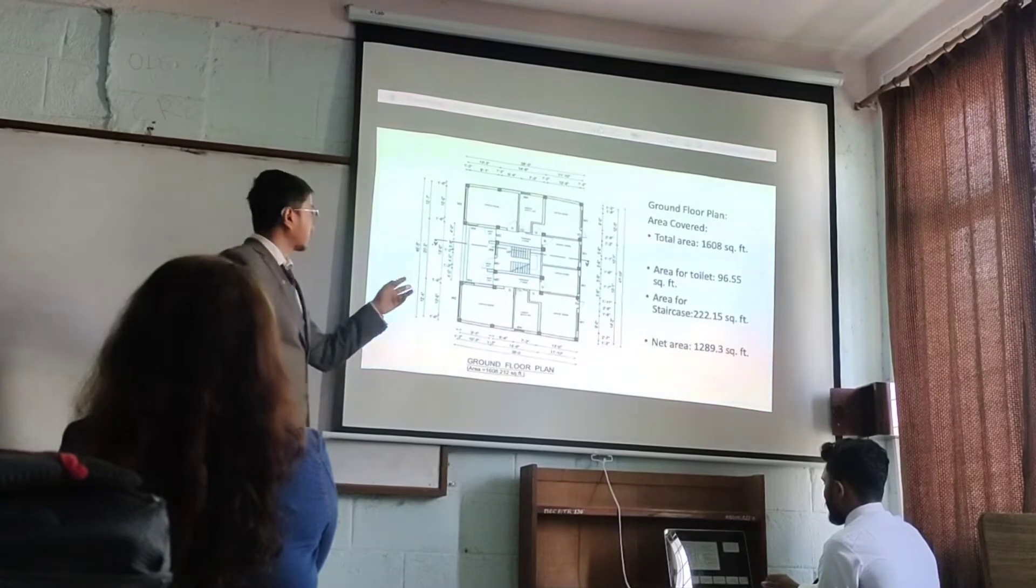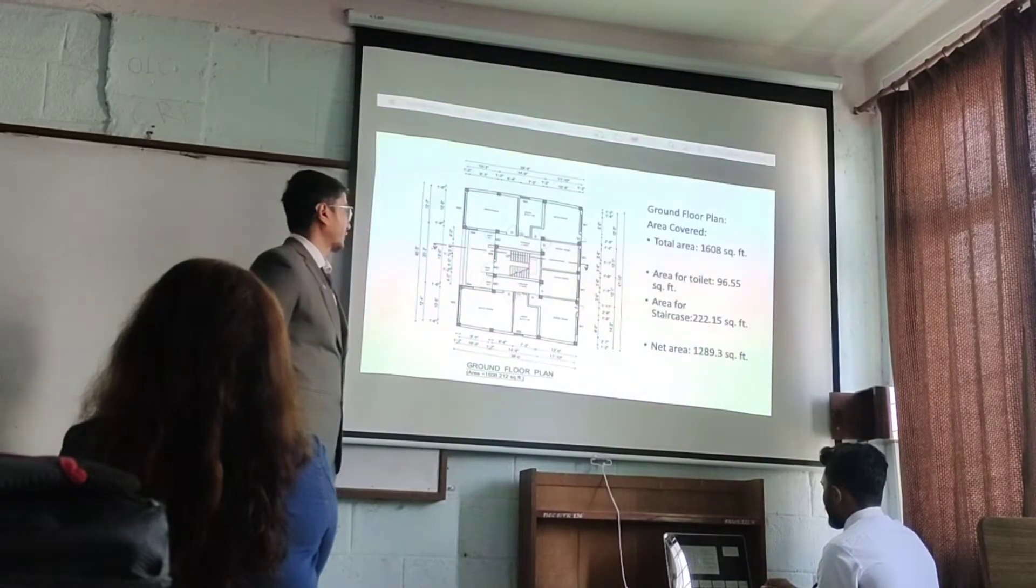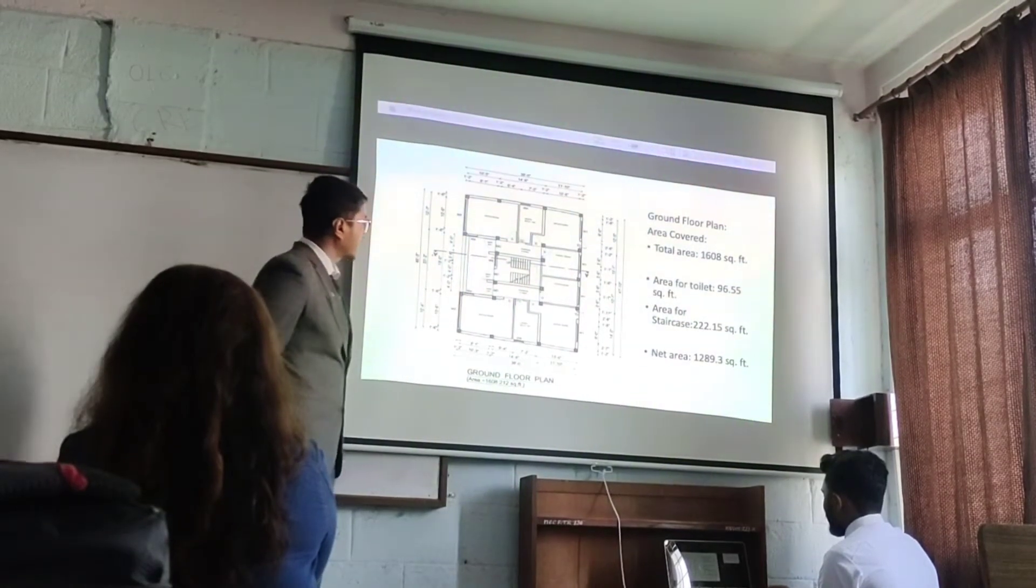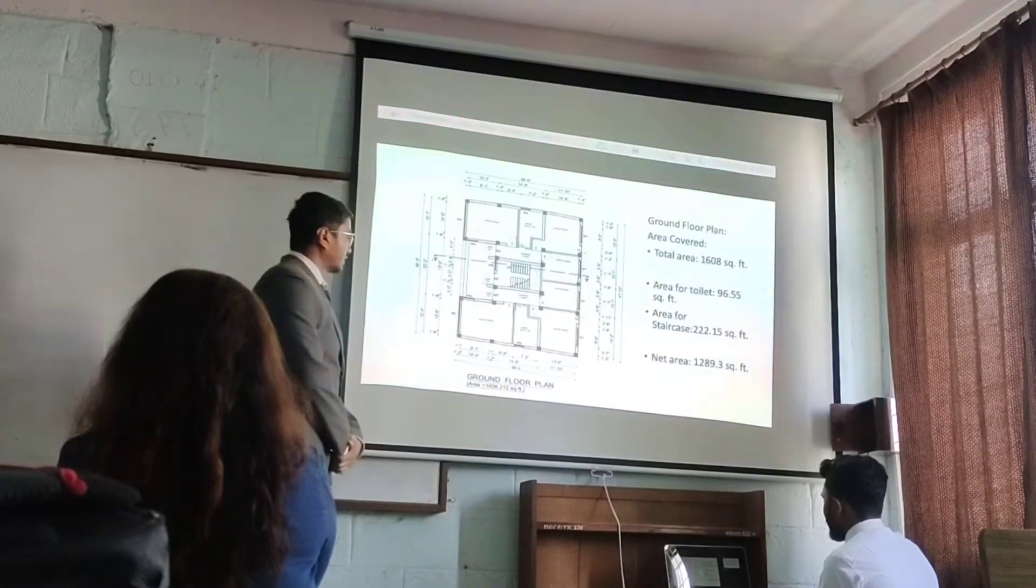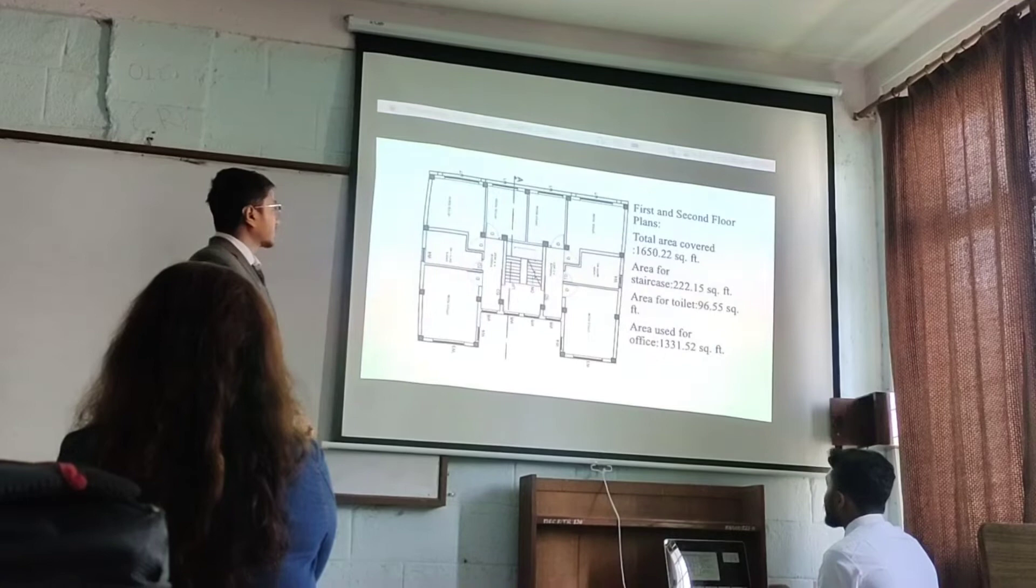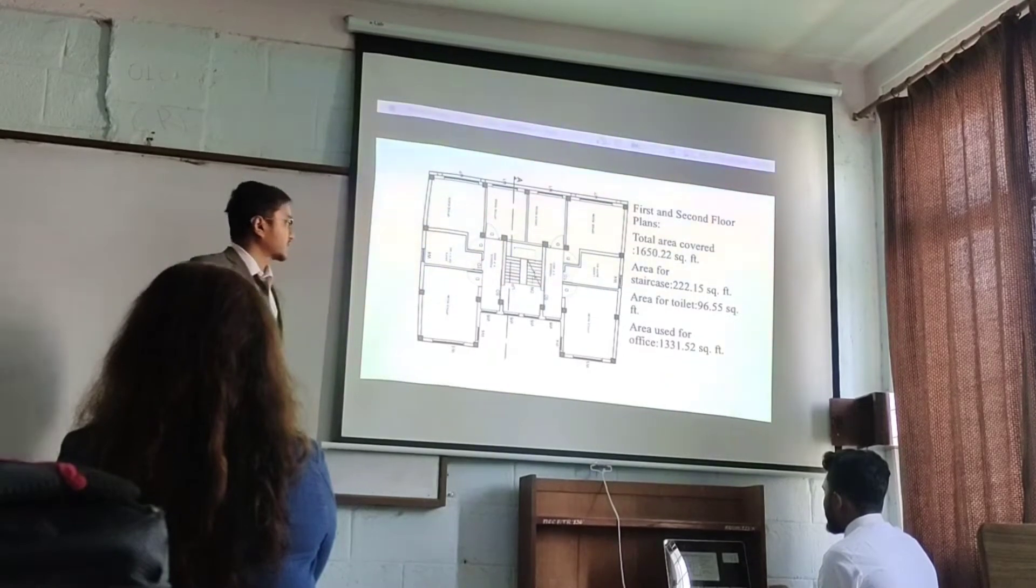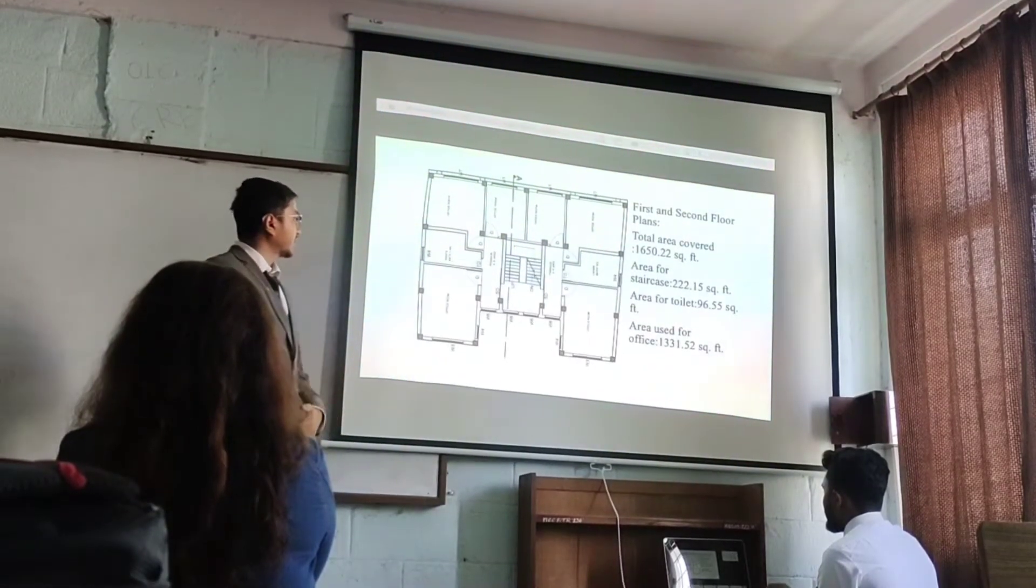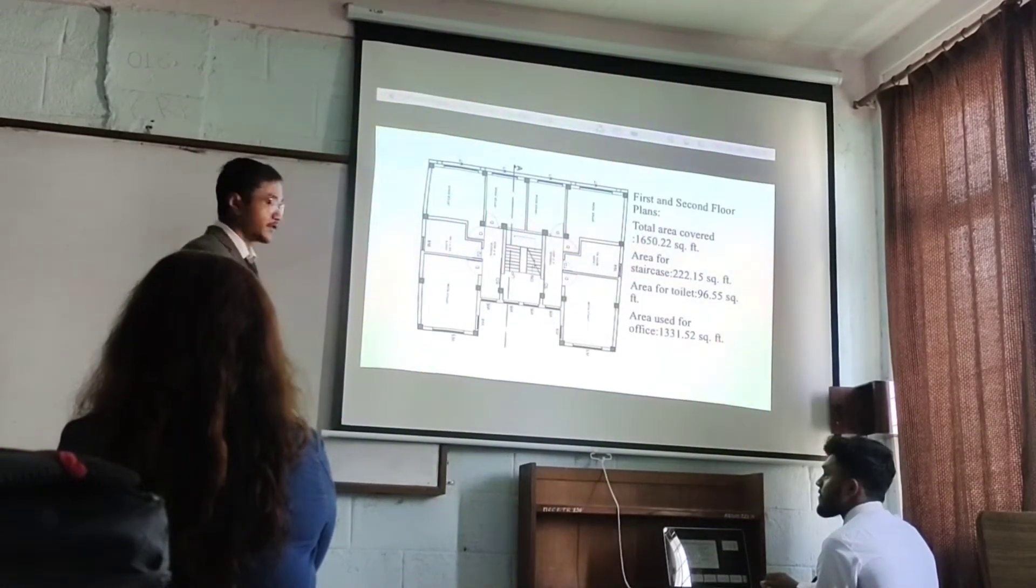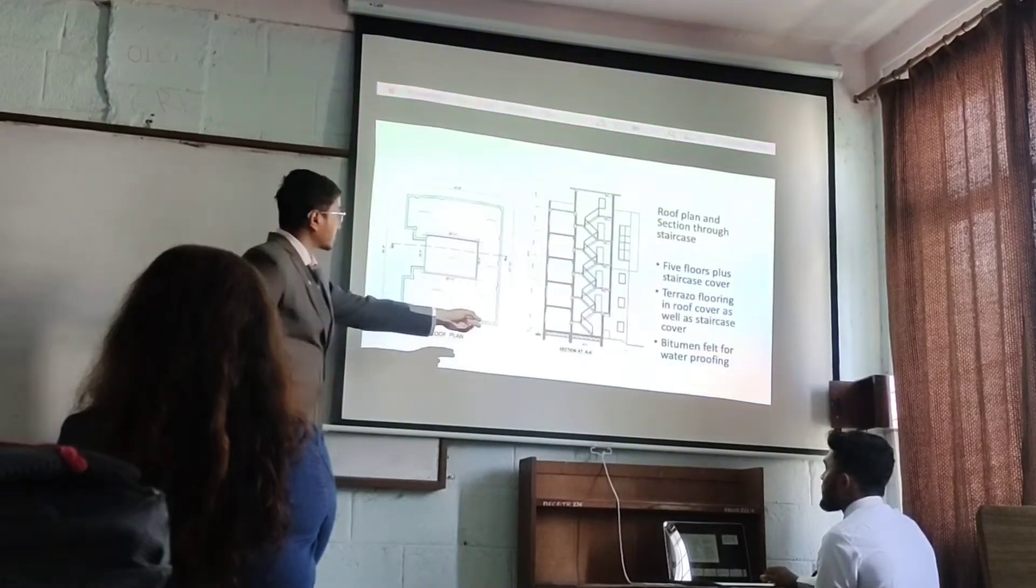This is the ground floor plan where we will analyze the system. The total area is 608 square feet, with a balcony area of 96.5 square feet and gate area of 289.2 square feet. The second floor has a balcony area of 650.22 square feet. This is the roof plan and the process for our building plan.